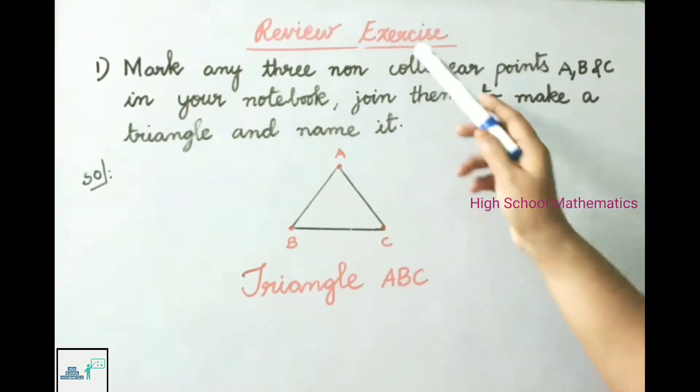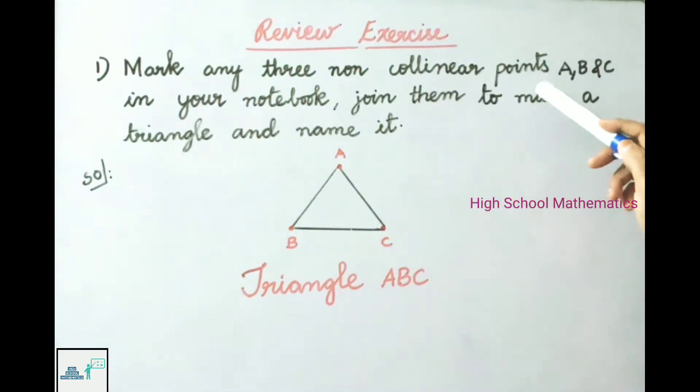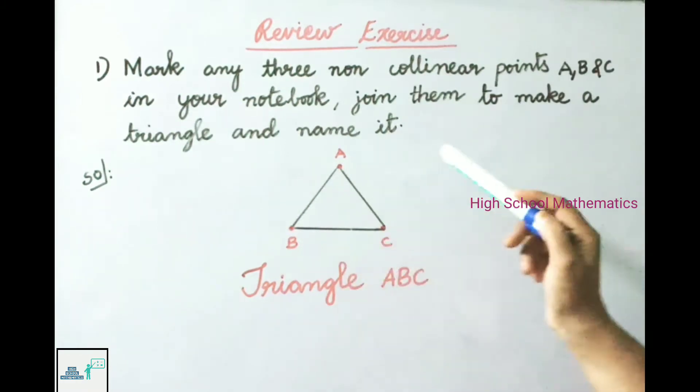See now review exercise. First, mark any three non-collinear points A, B, and C in your notebook. Join them to make a triangle and name it.